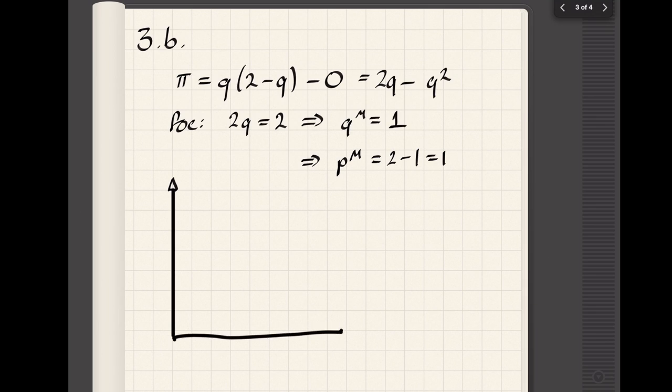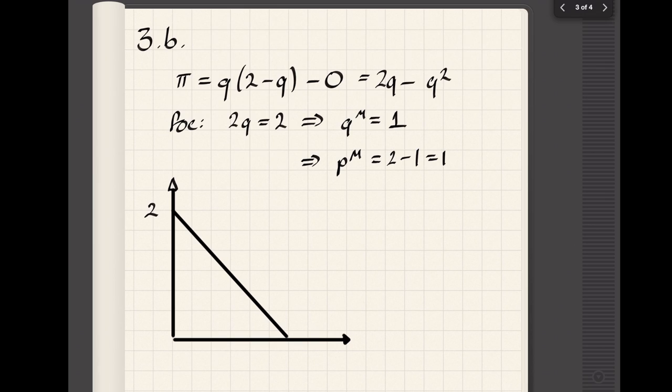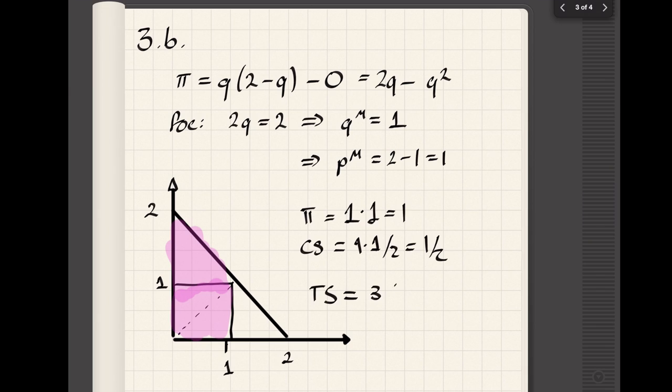We can draw a graph to figure out what the total surplus is going to be. With a slightly higher price, of course the total surplus is going to be a little bit less. We're going to have to add up the profits, which are going to be that rectangle of area one times one, plus the consumer surplus, which will be one times one divided by two. So we get a total surplus of three halves.